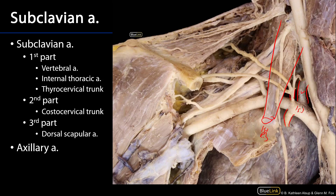The vertebral artery ascends the neck through the transverse foramina of cervical vertebrae six through one, before entering the skull through the foramen magnum, where it joins its counterpart to form the basilar artery. This basilar artery supplies the brain with blood and has potential anastomoses with the internal carotid arteries, which are the other major blood supply to the brain.